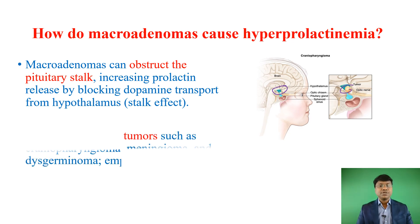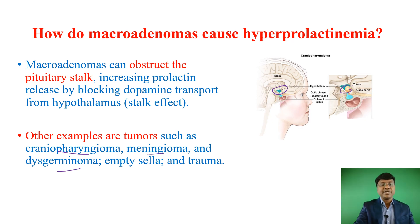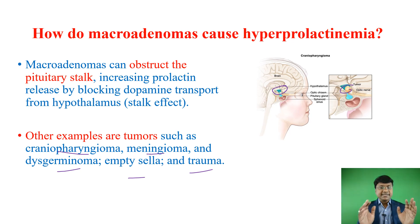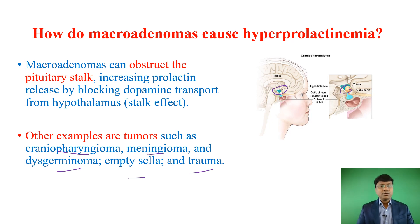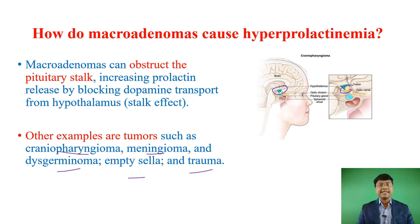What are those tumors? They include craniopharyngioma, meningioma, dysgerminoma, empty sella, and trauma. These are the tumors that obstruct the pituitary stalk and increase prolactin secretion. Macro adenomas prevent the action of dopamine from the hypothalamus on the anterior pituitary — that is the mechanism.